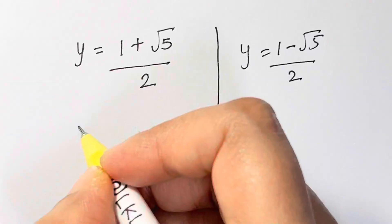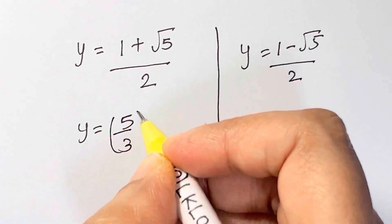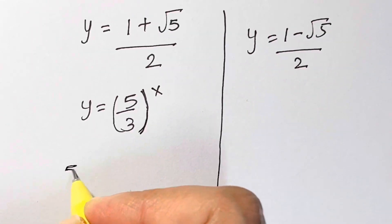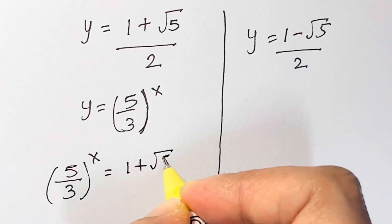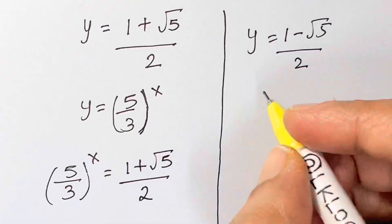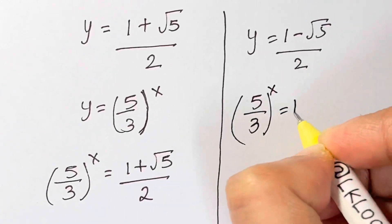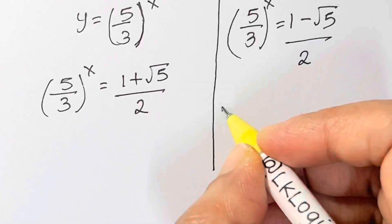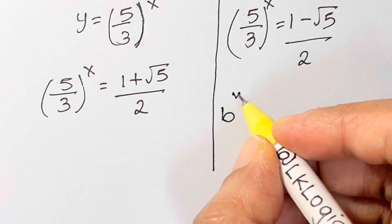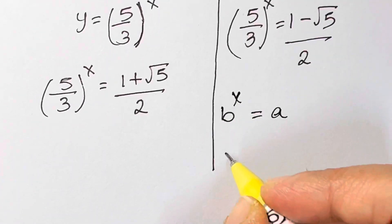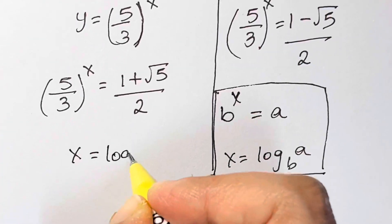Since y = (5/3)^x, we substitute back: (5/3)^x equals (1 + √5)/2, or (5/3)^x equals (1 − √5)/2. Using the log rule b^x = a implies x = log_b(a), we can solve for x in each case.